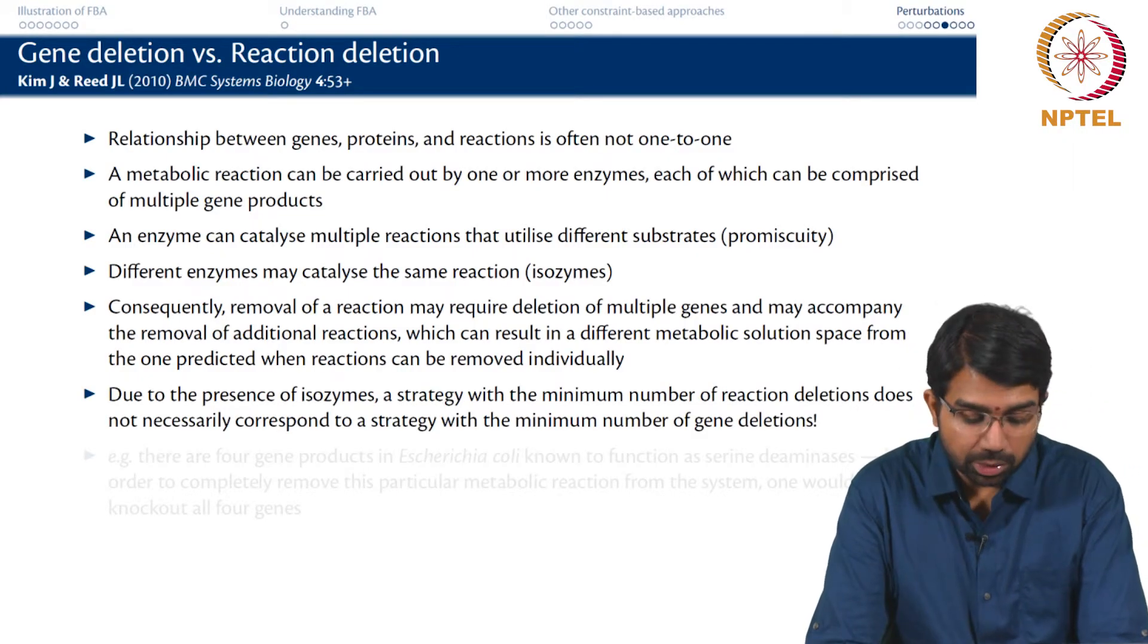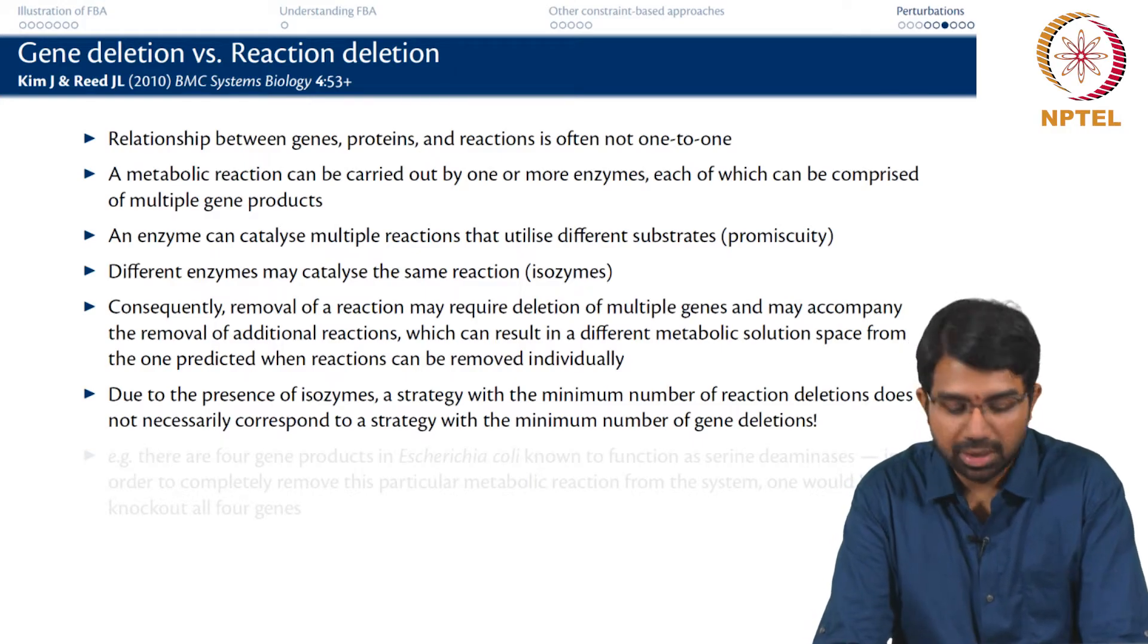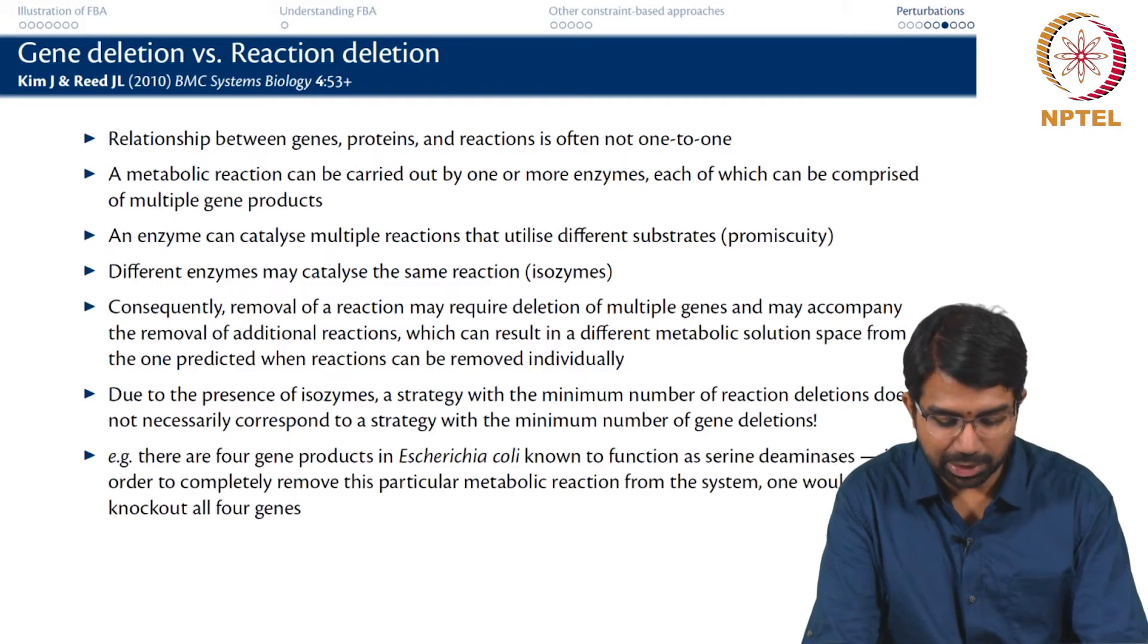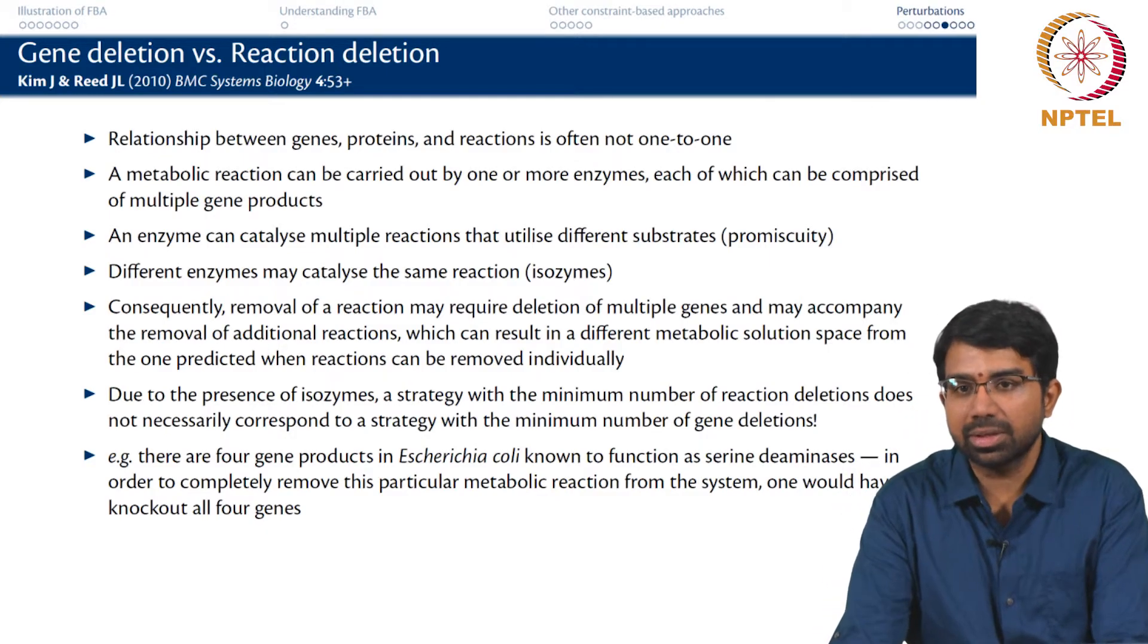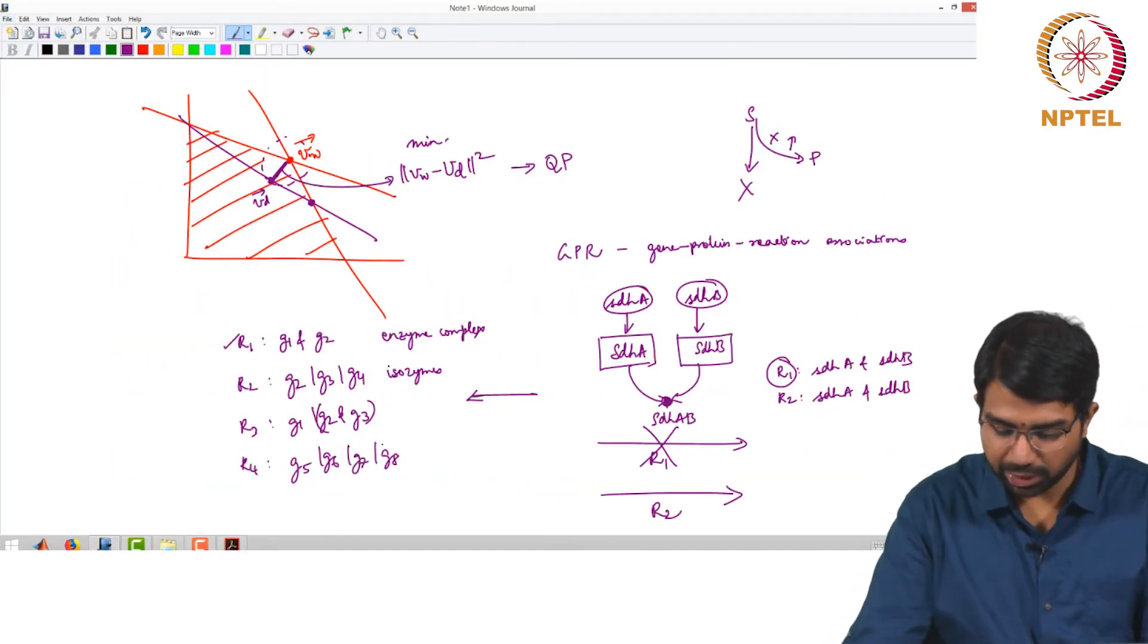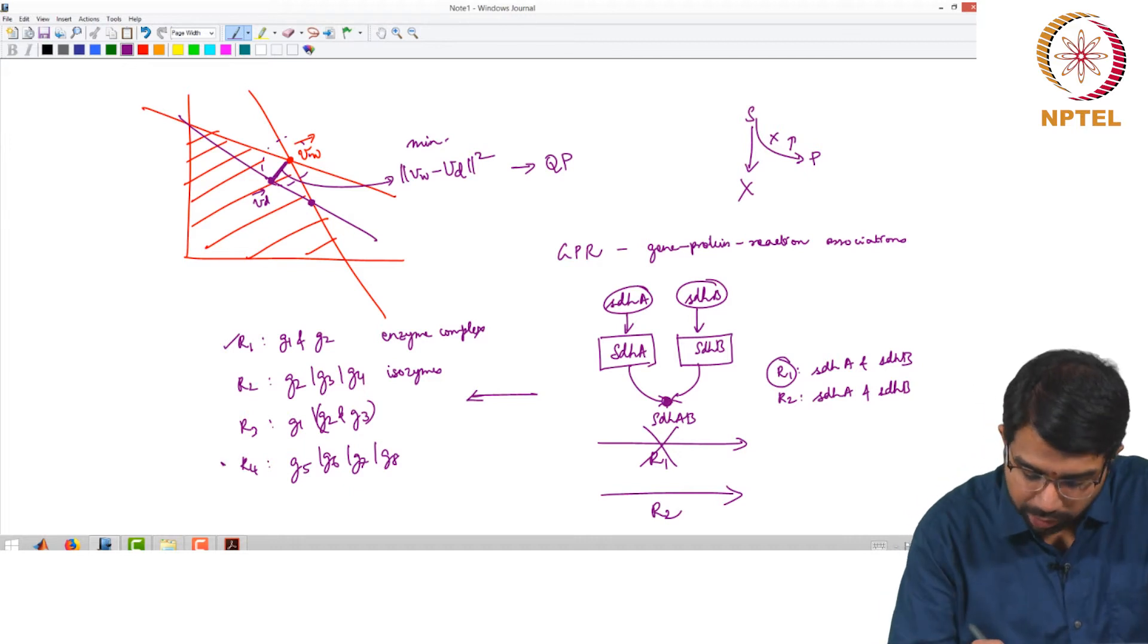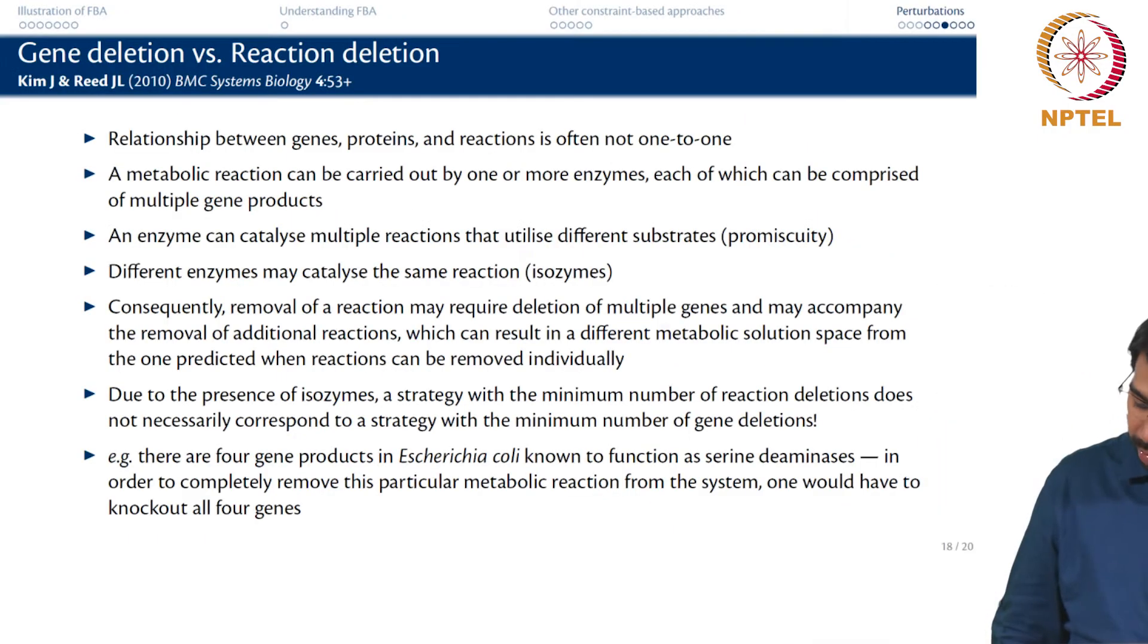Then again, due to the presence of isozymes, the strategy corresponding to minimum number of reaction deletions does not correspond to a strategy with the minimum number of gene deletions. Simply because there are 4 genes in E. coli that can function as serine deaminases. To completely remove that reaction - R4 is G5 or G6 or G7 or G8 - you have to knock out all these 4. This might be quite a challenge experimentally to knock out 4 enzymes.